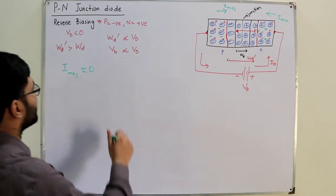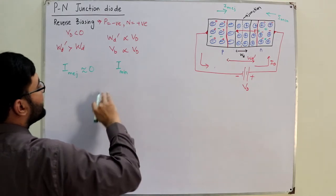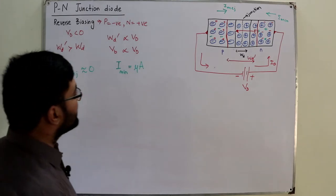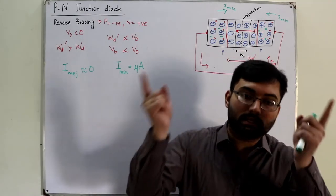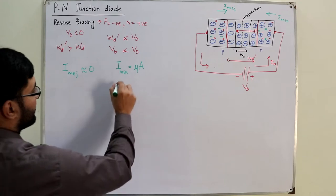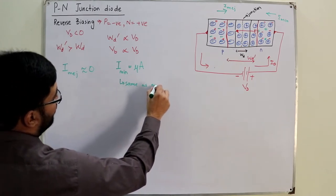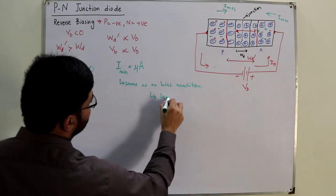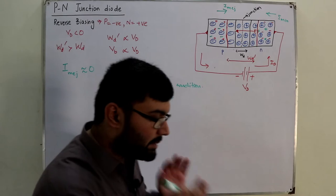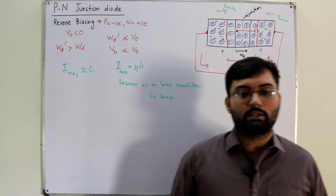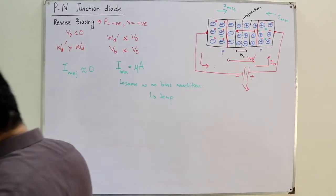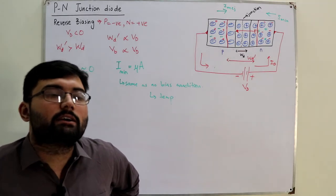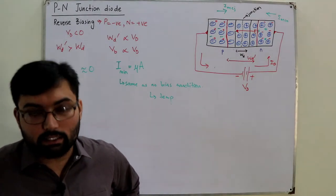The reverse saturation current, or minority charge carrier current, is still present, but it is in the range of micro to nanoamperes — a very small current. This would be the same as under the no bias condition, because the minority charge carriers depend only on the rise of temperature. The temperature is the same, so the number of minority charge carriers is the same, and the current remains the same. The only current in reverse bias is this drift current due to minority charge carriers.